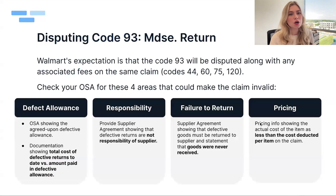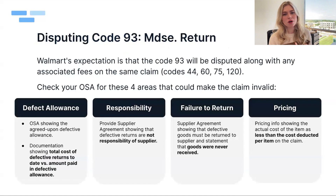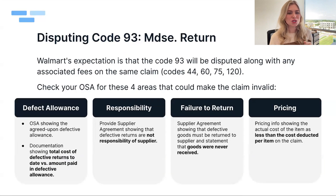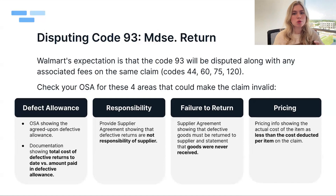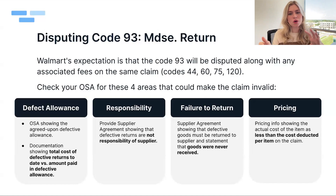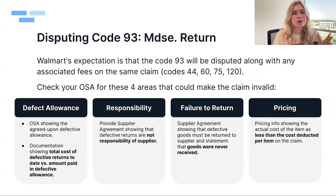Disputing Code 93: this is a merchandise return at the DC level. Code 93 typically comes with additional fees — codes 44, 60, 75, and 120 — representing handling charges Walmart incurs when processing returned product. When disputing Code 93, you need to dispute all associated codes together. The APDP system will actually flag this for you, indicating which additional codes must be disputed alongside it.